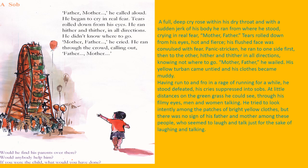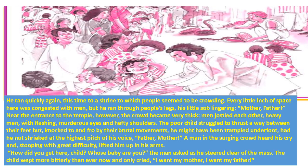His turban comes untied and his clothes become muddy, but he is not bothered. After some time his loud cries become sobs. His eyes seem filmy — full of tears — and he can't even see clearly. He looks among all the people, searching patches of clothing, but can't find his mother and father. He wonders why these people are making so much sound, talking and laughing, while he can't hear his parents. He ran quickly toward a shrine — a temple — where he saw many people.